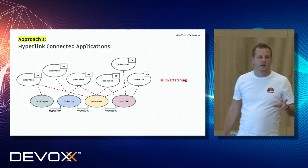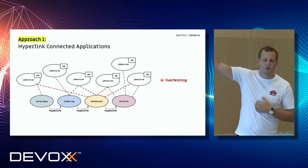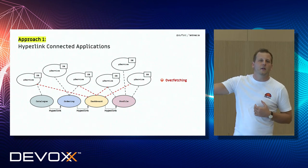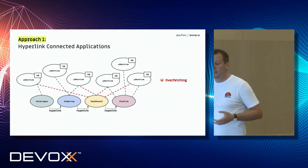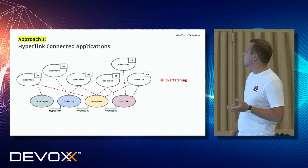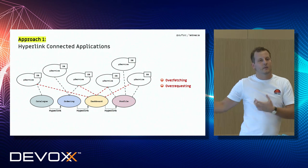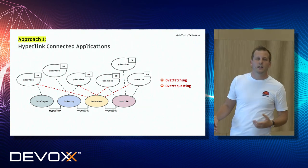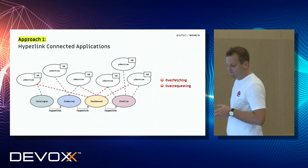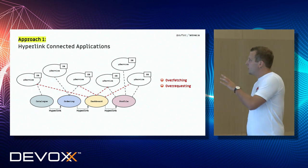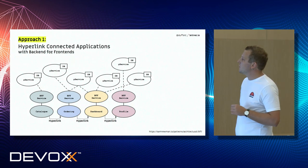If we do this, we usually have two issues. The first one is overfetching: let's say we have a profile with 50 fields — our generic profile service returns all 50, but on the dashboard we just need first and last name. So 48 fields are useless — we're requesting too much information we don't need. The second issue is overrequesting, meaning we have to make many requests to finally get the information we need. This is usually when people start to play with REST chaining.